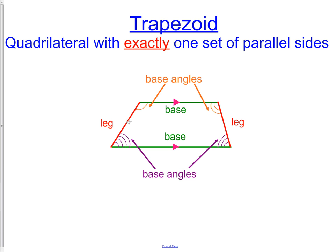We have four base angles — the two at the top that are in orange and the two at the bottom that are in purple. That is the definition of a trapezoid. We do not know anything about the lengths of the sides; we just know that two of them are parallel. Just because they're parallel does not mean they have the same length.